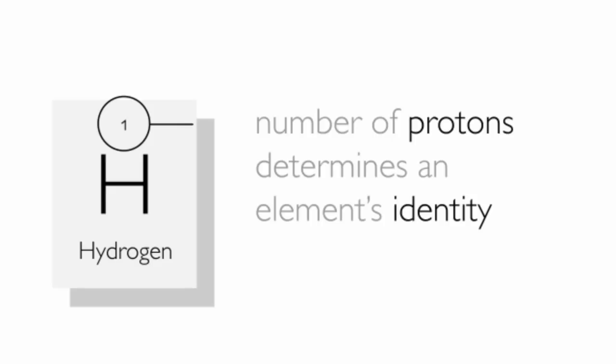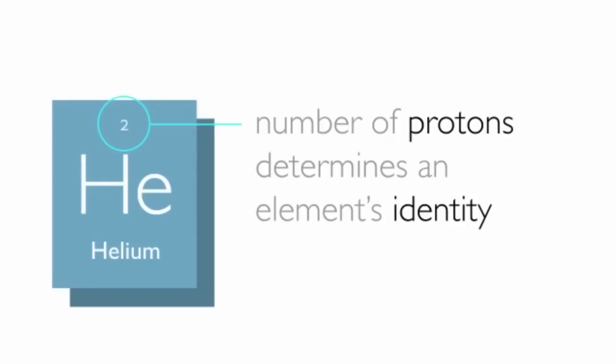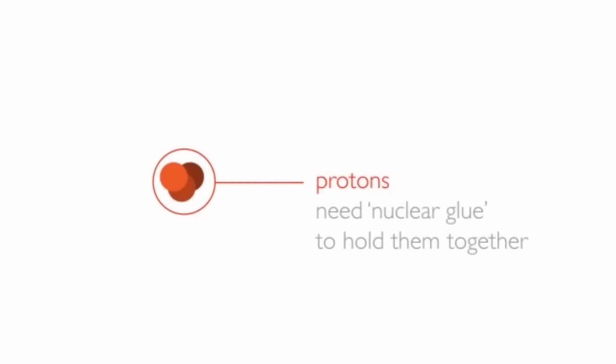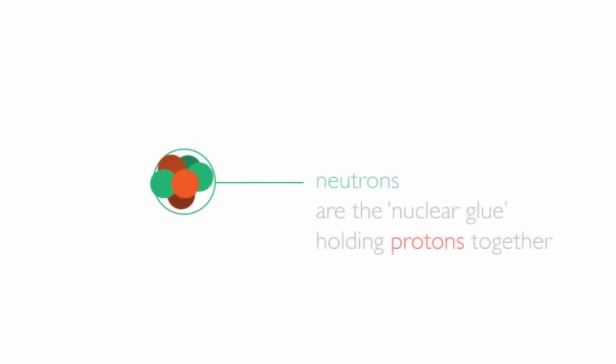The identity and chemical properties of any atom are determined by the number of protons in its nucleus. As atoms get bigger and heavier, the nuclei get bigger and heavier, and the protons need a sort of nuclear glue to help hold them together. Neutrons provide this glue and prevent the positive charges of protons from repelling each other thanks to something called the strong nuclear force.